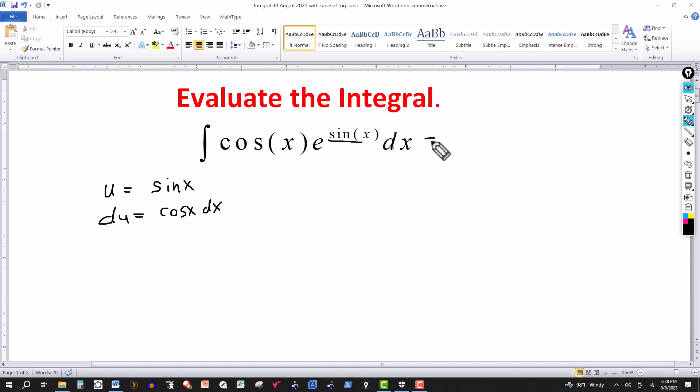We're trying to transform this integral into one involving the variable u instead of x. So notice here, cosine of x and dx, that's the product. And this is telling me you can replace that product by du. So these two can be replaced by du.